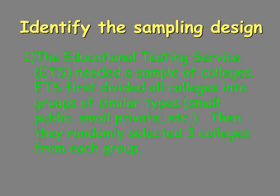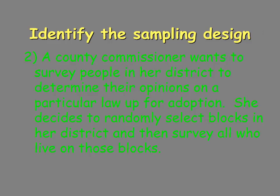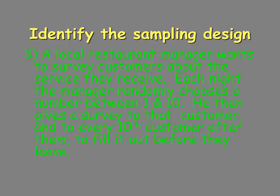Looking at the sampling design, we want to be able to identify what type it is. First example: divide all colleges into groups of similar types, then randomly select three colleges from each group — that's stratified, because they divided the schools up first and then sampled. Second example: randomly selects blocks in her district and then surveys all who live on those blocks — she randomly selected an area and sampled everyone, so that's a cluster sample. Third example: every tenth customer — as soon as you see that, you should think systematic.